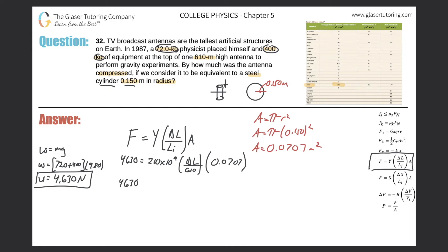So 4,630 equals 210 times 10 to the 9 times 0.0707 divided by 610. And that works out to be 2.43 times 10 to the, I'm going to count this one, 3, 6, 7.